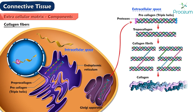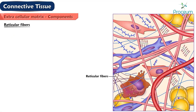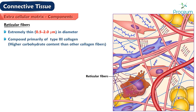Collagen fibers are produced in a two-stage process, involving both intracellular and extracellular steps. Collagen fibers have great tensile strength, which imparts both flexibility and strength to tissues containing them. Reticular fibers are extremely thin, 0.5 to 2 micrometers in diameter, and are composed primarily of type 3 collagen.